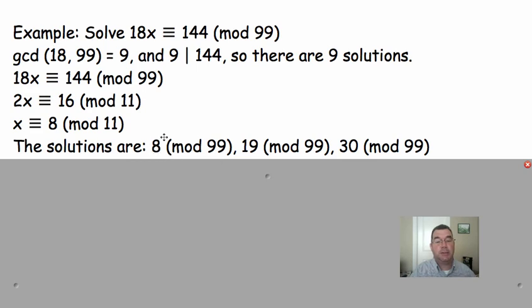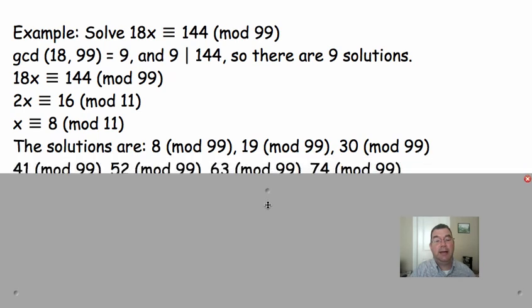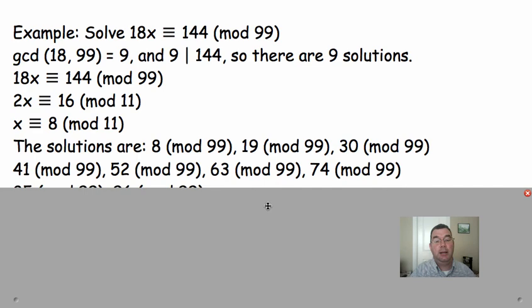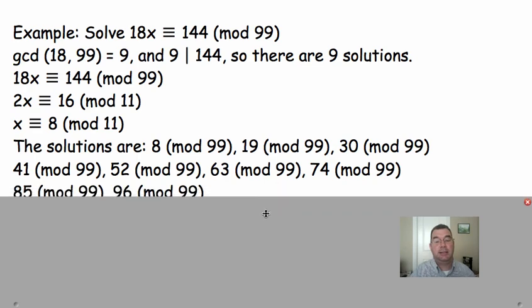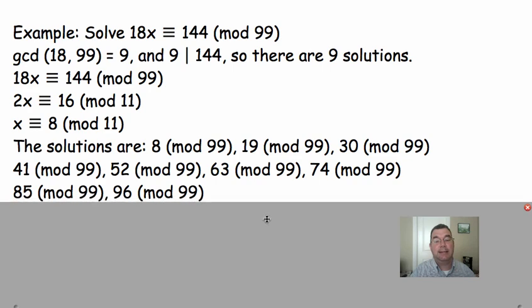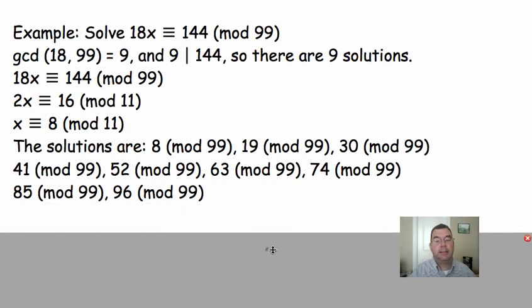So, 8 works. If I add 11, I get 19. If I add 11 more, I get 30. If I add 11 more, I get 41. Then 52. Then 63. 74. 85. And 96. And, if I add 11 more, I will get 107, which is higher than 99. And, that actually gives me a remainder of 8 as well. So, the whole thing cycles. So, there's a second example of that.